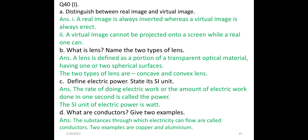Distinguish between real image and virtual image. A real image is always inverted whereas a virtual image is always erect. A virtual image cannot be projected onto a screen while a real one can. What is a lens? Name the two types. A lens is defined as a portion of a transparent optical material having one or two spherical surfaces. The two types of lens are concave and convex.